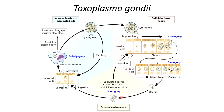The oocyst will then be released through the feces of the cat. There will be two sporoblasts inside one oocyst, and each sporoblast contains four sporozoites, as shown in the image. It takes about seven to ten days within the environment for the oocyst to become sporulated and infectious. Then an intermediate host, such as a small mammal — a mouse or a bird — will ingest the sporulated oocyst.